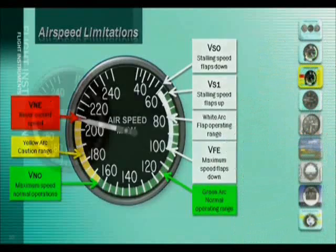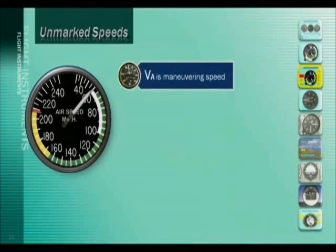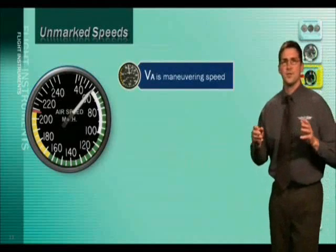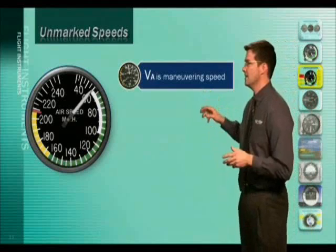There are also some airspeed limitations that are not marked on the airspeed indicator, but you need to know them just the same. VA is the maneuvering speed, and this is the speed at which full control deflections will not cause structural damage to the airplane. The airplane will stall before G loads can cause damage. VA or maneuvering speed can be found in the pilot's operating handbook for the particular airplane you are flying.